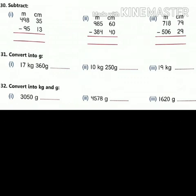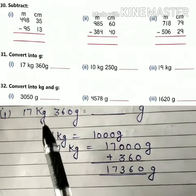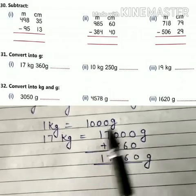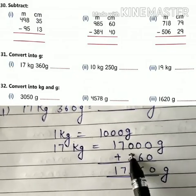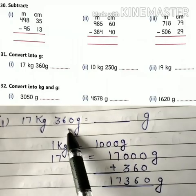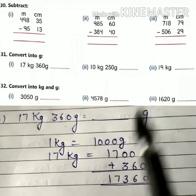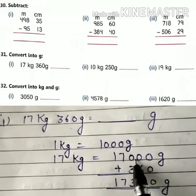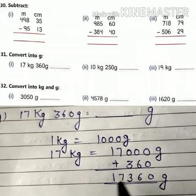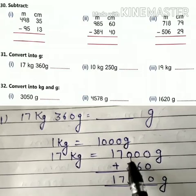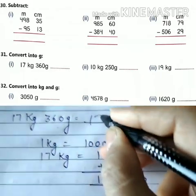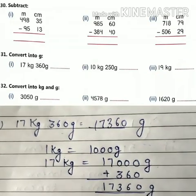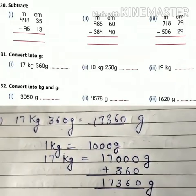Question number 30 is simple subtraction — you can do it yourself. Question number 31: convert into grams. First part: as we know 1 kilogram is equal to 1000 grams, so 17 kilograms is equal to 17 multiplied by 1000, which is 17,000 grams. This part is already in grams, so add 360 to 17,000 to get 17,360 grams.